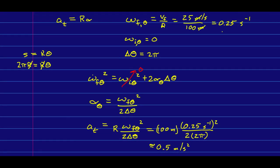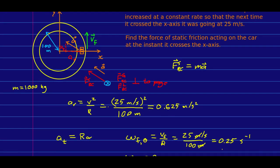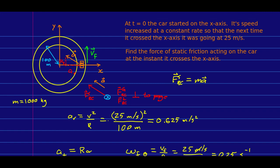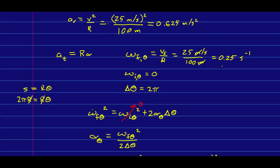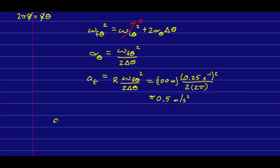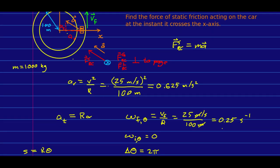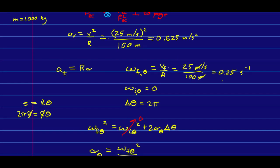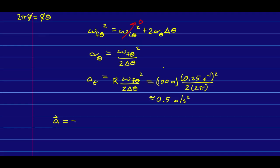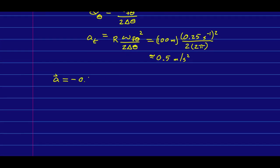And so I now know the whole acceleration. In my coordinate system, the x component is negative. And so I can just write in total the acceleration, which I know has a negative x component and a positive y component.